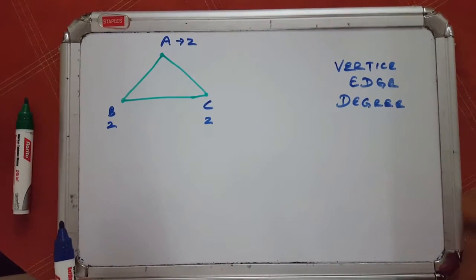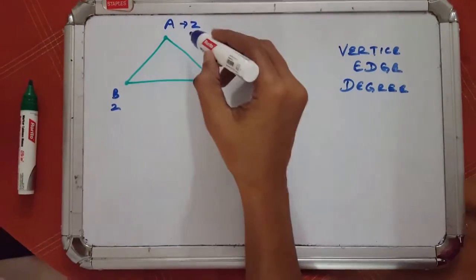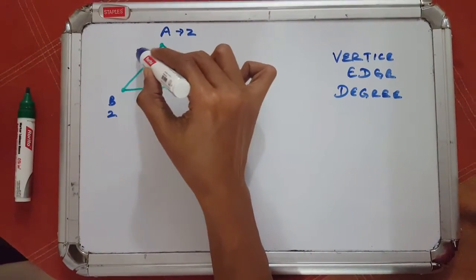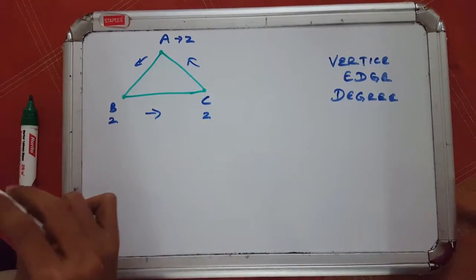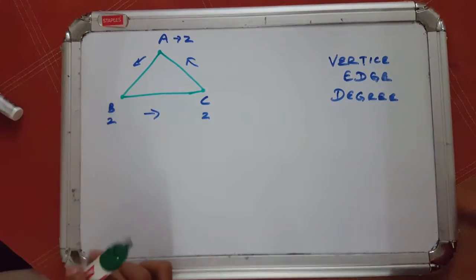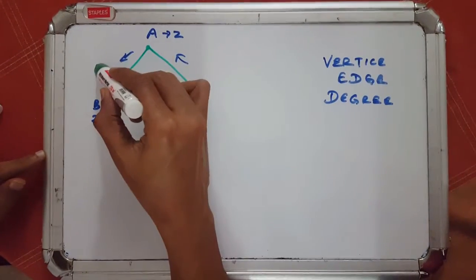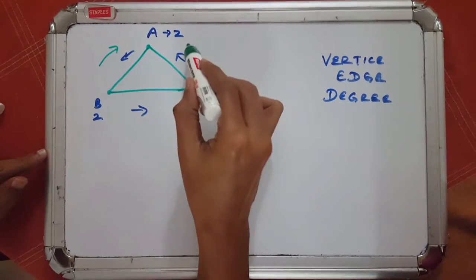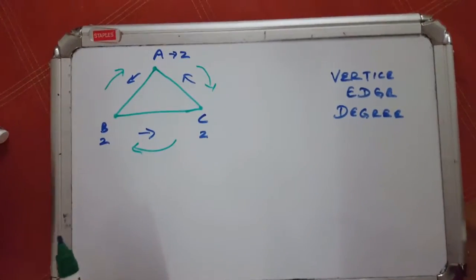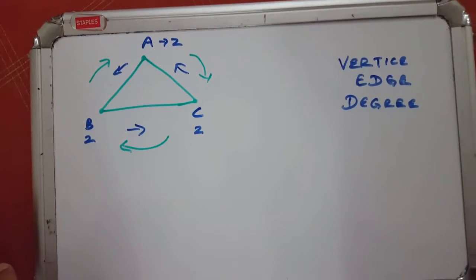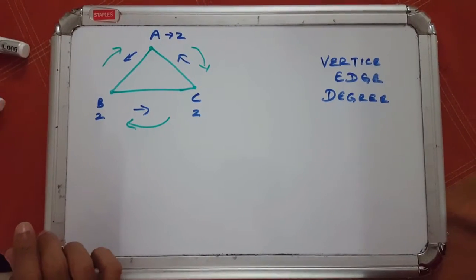Now let's see what this means. Say you want to traverse the triangle — start at any one of the vertices and go through all of the edges without traversing any of them twice. If you start from A, go to B, B to C, and C back to A — wonderful, we achieved that. If you start from B, go to A, back to C, and then back to B — you're able to do it too. Each of those vertices has a degree of two, meaning they're even-numbered.